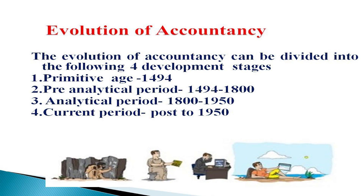The evolution of accountancy can be divided into the following four development stages. One is the primitive age, up to 1494. Two is the pre-analytical period, 1494 to 1800. Three is the analytical period, 1800 to 1950. And the last is the current modern period, post 1950.